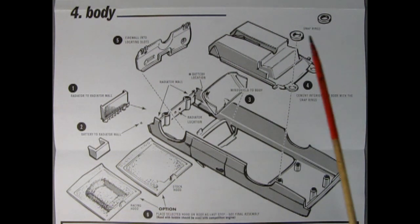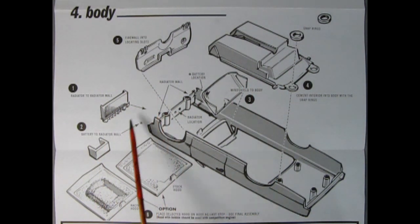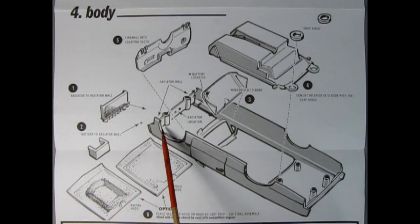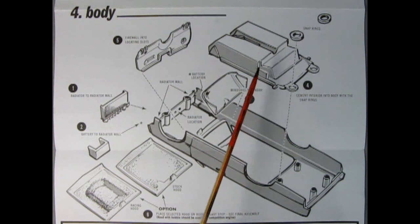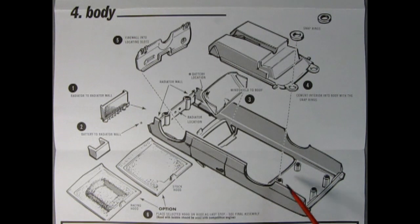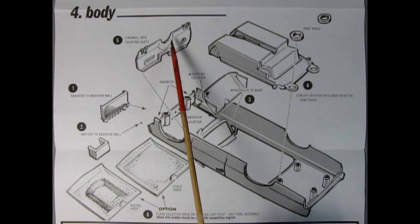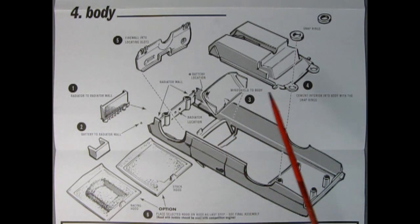Step four shows the body assembly. First off, we have our radiator being glued to the radiator wall. Then our battery gets glued to the radiator wall. Then we glue in our windshield to the windshield frame, cement in the completed interior, and you can add in these snap rings just to hold it all in place. Then the firewall into the location slots, which are in here.